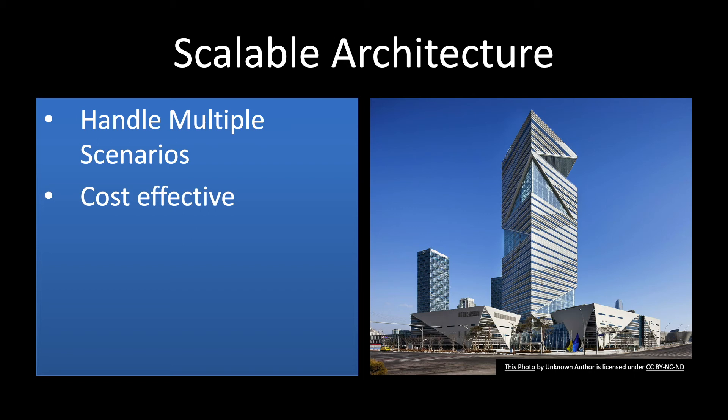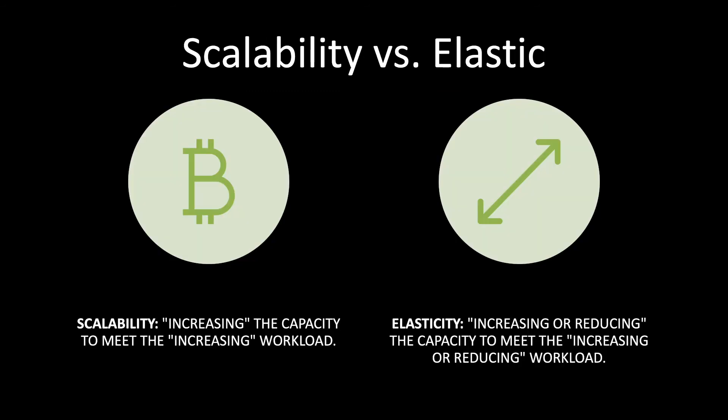In a scalable architecture there are two things: first, we should be able to handle multiple scenarios — whether it's low demand or high demand. Second, it should be cost effective. There are cases where you can handle multiple scenarios but it might not be cost effective because you have reserved more capacity than you need and you keep paying for that. That is not a scalable architecture because it's not cost effective.